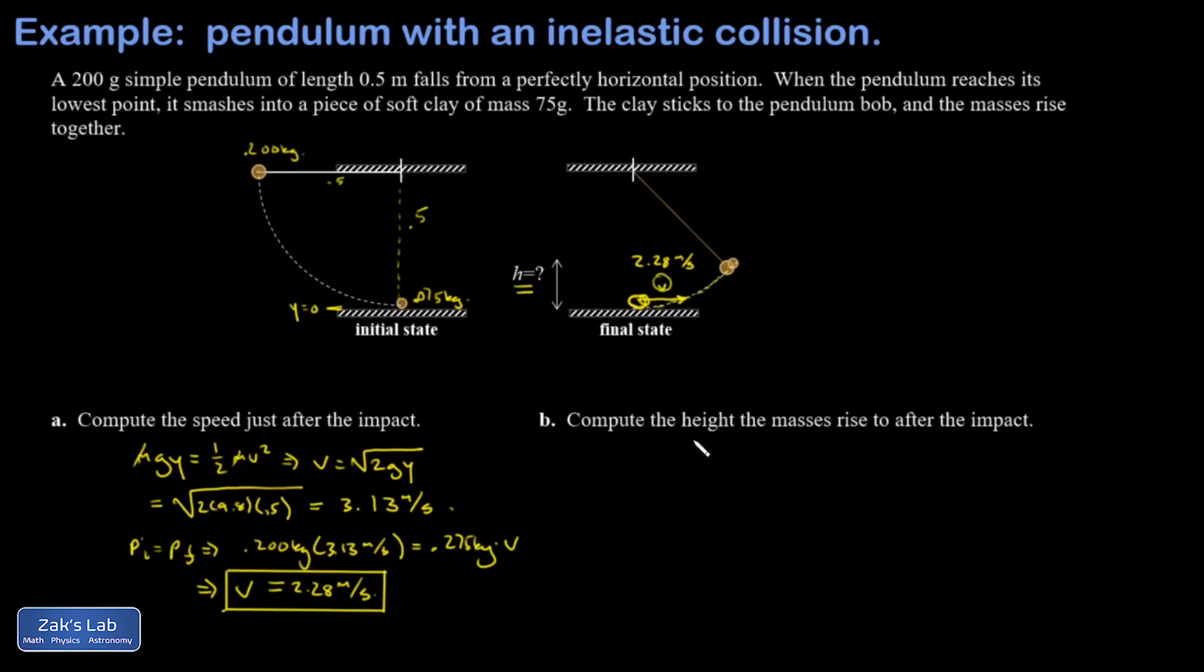Writing down conservation of energy here, this time I have my kinetic energy turning into gravitational potential energy. And so my final height here, Y, is going to be V squared over 2G.